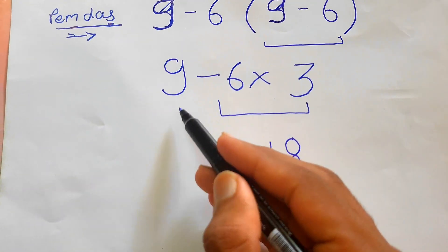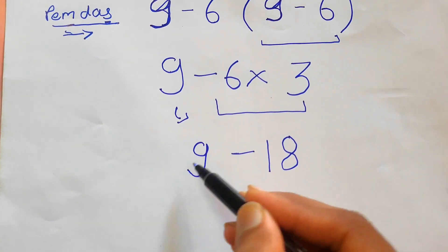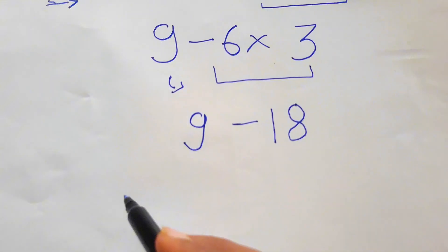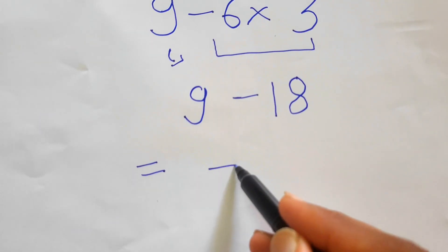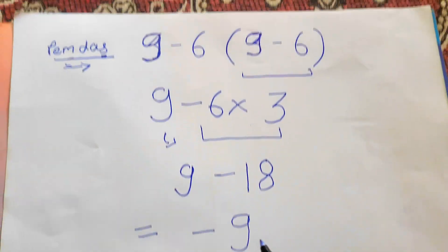Now we need to rewrite this 9 as it is. So 9 minus 18. 9 minus 18 gives us minus 9. Wonderful, right? I want to know in the comment section how many clever minds are there who have given the answer minus 9 in the first attempt.